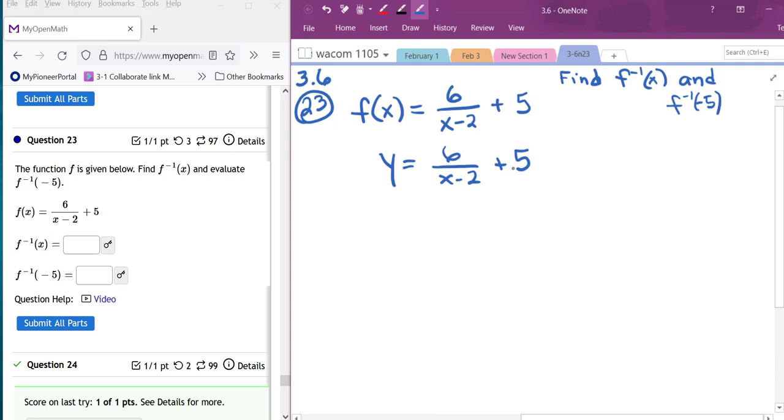Then remember we're going to switch the x and y's. Next we have to isolate y. So first of all I'm going to get rid of this 5, so I'm going to subtract 5 from both sides.